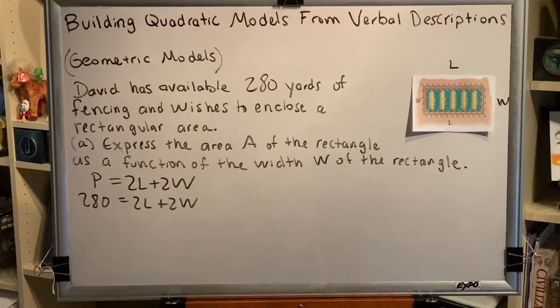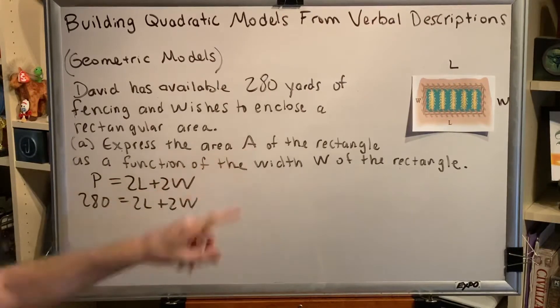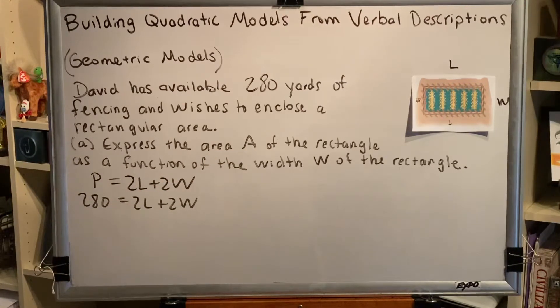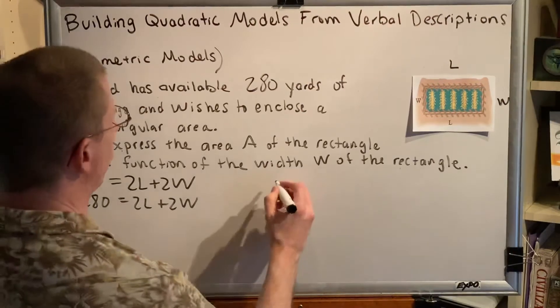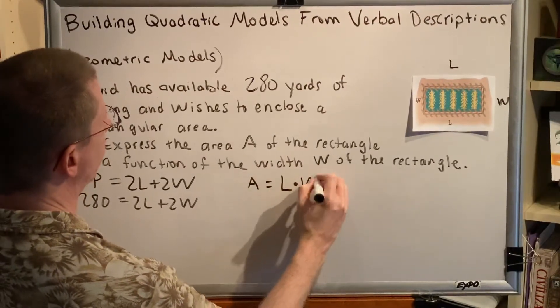Now the second part of this problem that we want to pay attention to is what we're being asked to create. We're being asked to express the area A. So we need to come up with a formula for the area of this rectangle, and the area of a rectangle is length times width, L times W.